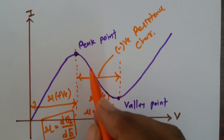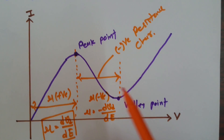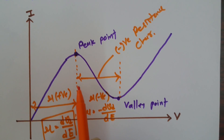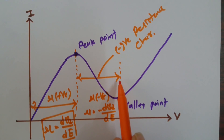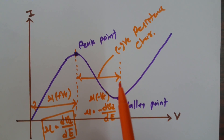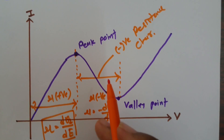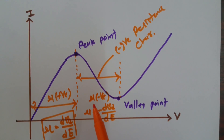Because of the GUN effect, the GUN Diode offers negative resistance characteristic. This negative resistance gives the GUN Diode very low reverse recovery time, allowing it to be used in high-frequency applications such as microwave applications.